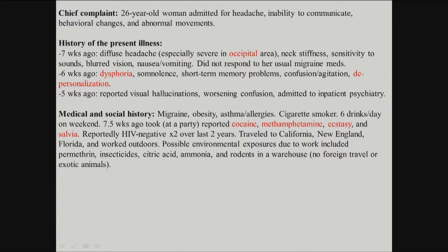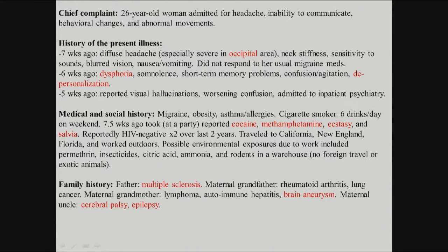History of migraine, obesity, some allergies, some drug use — cigarette smoker, history of cocaine, amphetamine, ecstasy, and salvia — some travel history, and some exposures to things like insecticides, which could be relevant. Family history: some autoimmune stuff — multiple sclerosis, rheumatoid arthritis, hepatitis, history of aneurysm, history of epilepsy in the family.